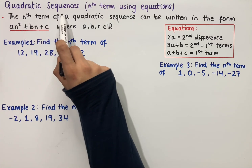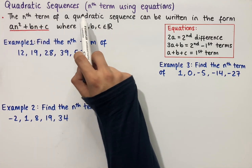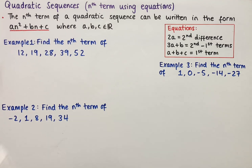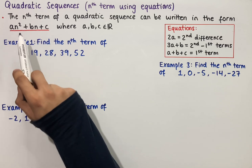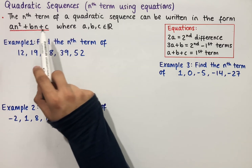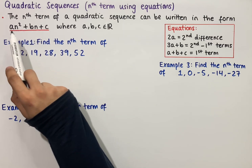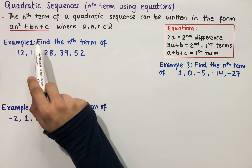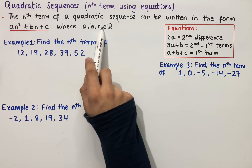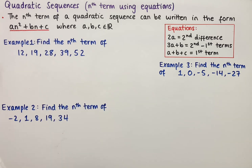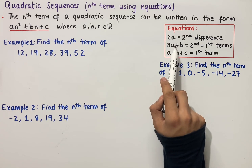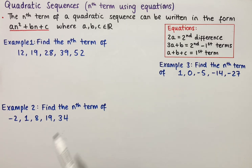Let's look at quadratic sequences and how to work out the nth term using equations. The nth term of a quadratic sequence can be written in the form an squared plus bn plus c, where a, b and c are real numbers. And we can use these equations to work out the values of a, b and c.